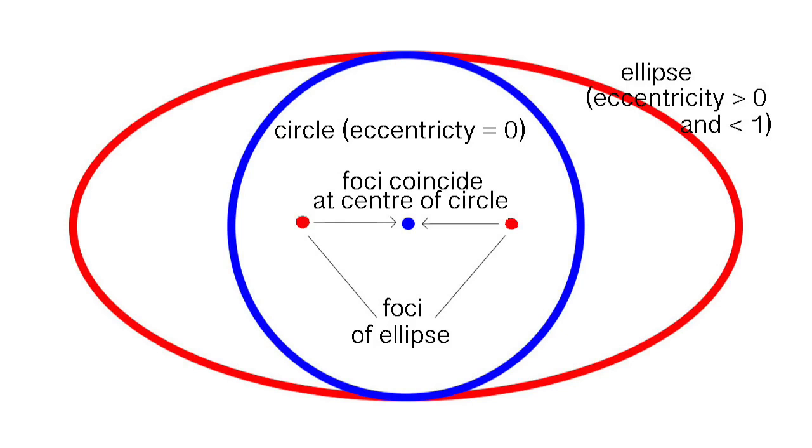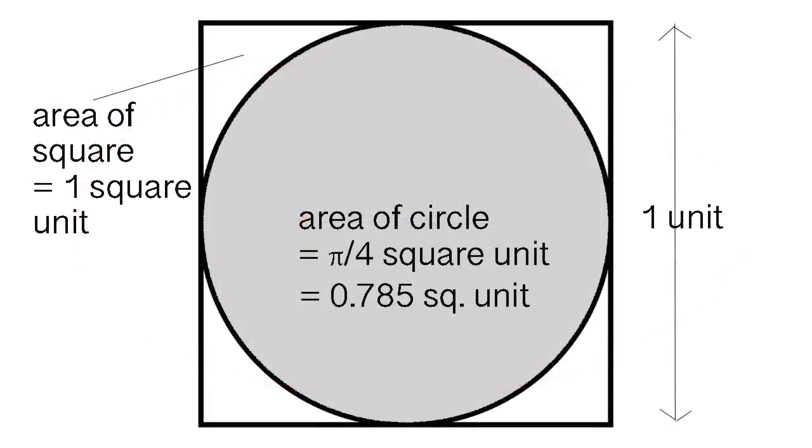A circle is also the two dimensional shape enclosing the most area per unit perimeter. A circle has about 80% of the area of a similar width square. The actual value is π/4, which is about 0.785 or 78.5%.